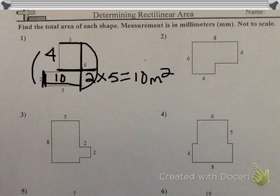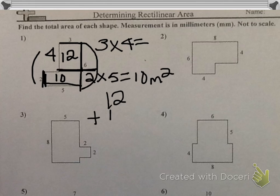To find the area of the top rectangle, I now use the length and width: 3 times 4, and that equals 12. To find the area of the whole rectilinear figure, I now have to put the 12 and 10 back together, which equals 22 millimeters squared.